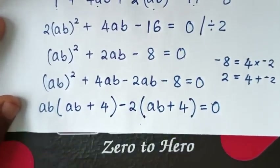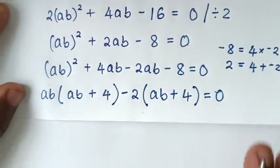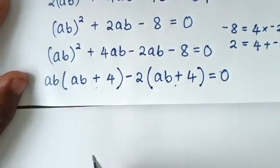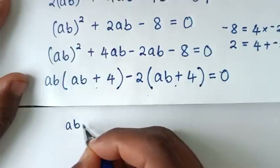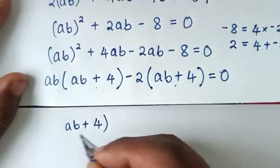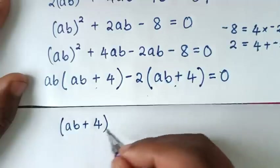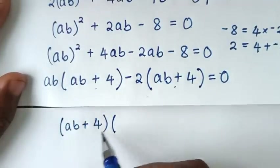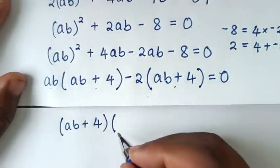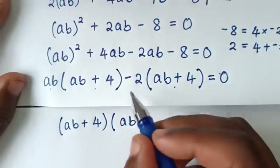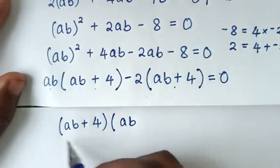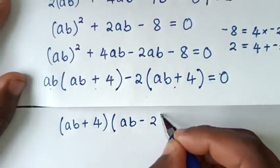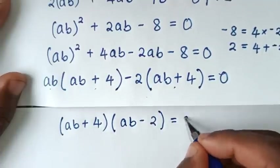Then in the next step, (ab+4) is common, so we take (ab+4) out of the bracket. Then here it will be ab, and this divided by (ab+4) gives -2. So: (ab+4)(ab-2) = 0.